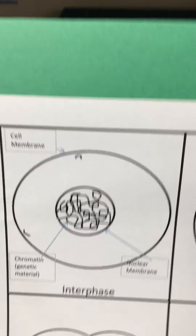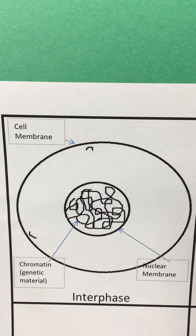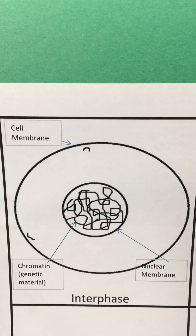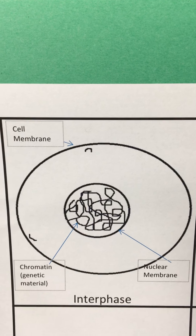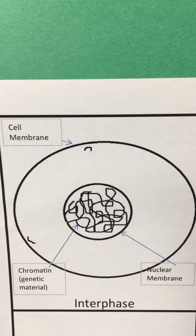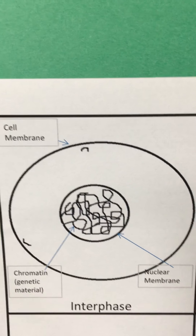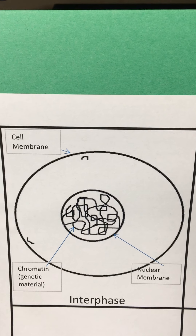Before we try to identify them, let's walk through the different stages that we might be seeing. We'll start off with the first stage: interphase. Interphase is where the cell is duplicating all of its organelles and the DNA, but that DNA is still in a loose form that we call chromatin and it is found in the nucleus surrounded by the nuclear membrane. So this is the first stage of the cell cycle.